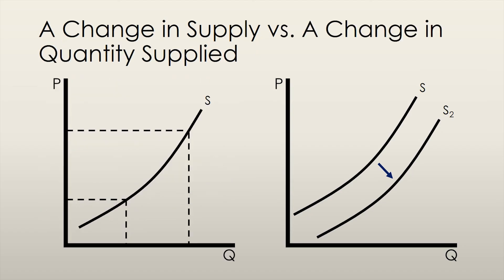We need to keep in mind the difference between the quantity supplied of a good and its entire supply. When we say that the quantity supplied is changed, we are referring to a movement along the supply curve. This can only be induced by a change in the price of that good.